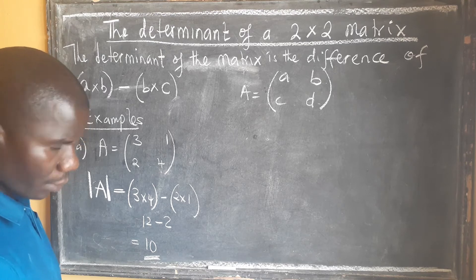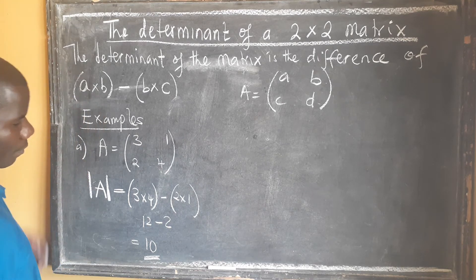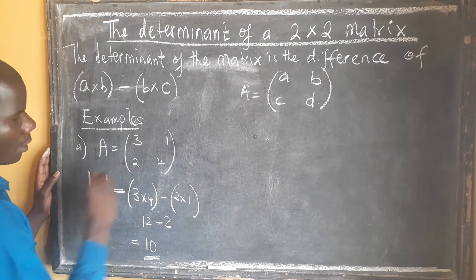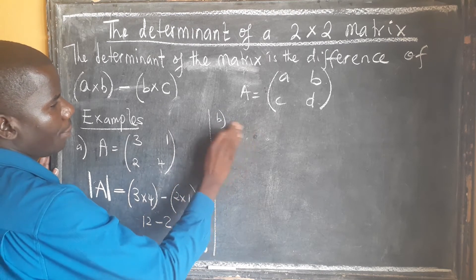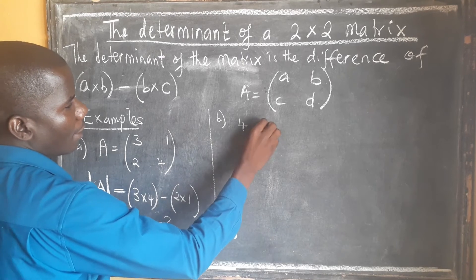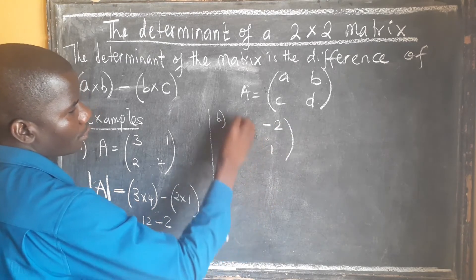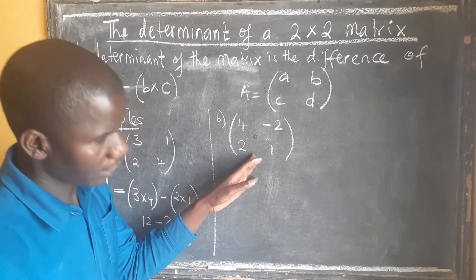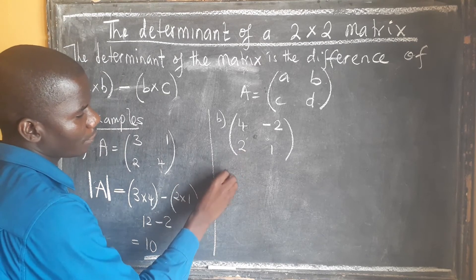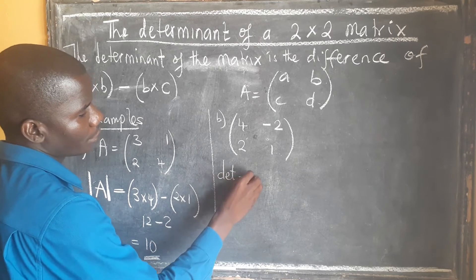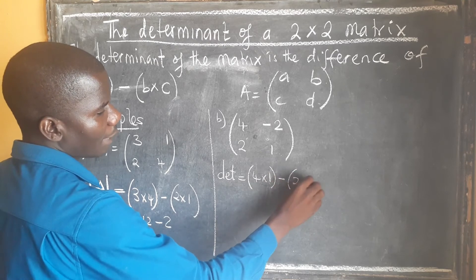Let's look at the second example. We have matrix B, which is a two by two matrix. How do we find the determinant? The determinant of this matrix equals 4 multiplied by 1, minus 2 multiplied by negative 2.